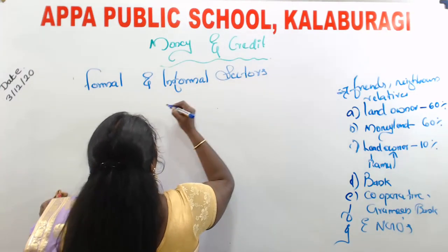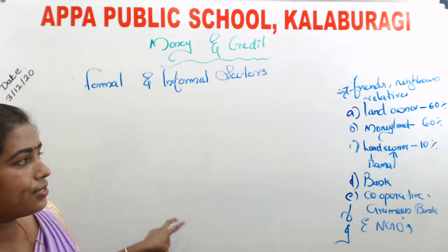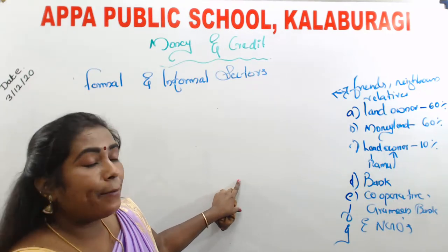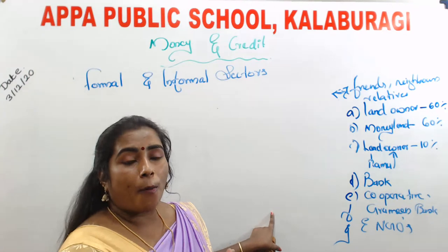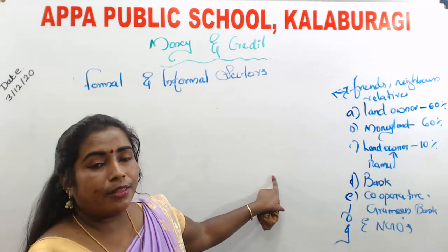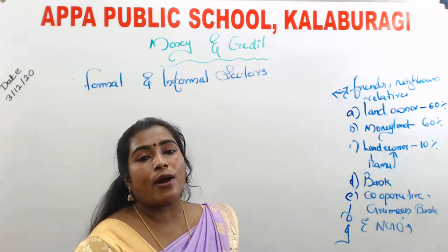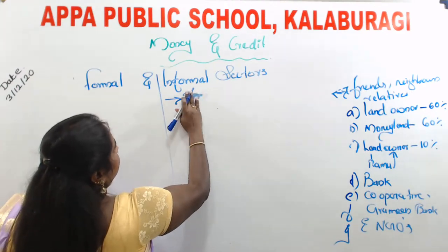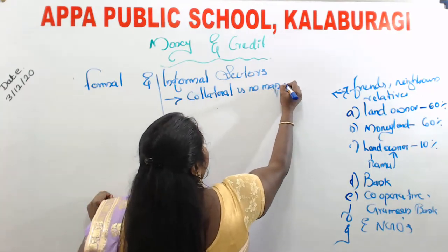Now we want to know the differences between formal and informal sectors of credit. When getting money from friends, neighbors, or relatives, we do not need to submit any security — that is, we do not need to submit collateral. Collateral means any documentation related to how much property we have, such as land details or other assets. In the informal sector, collateral is not mandatory.